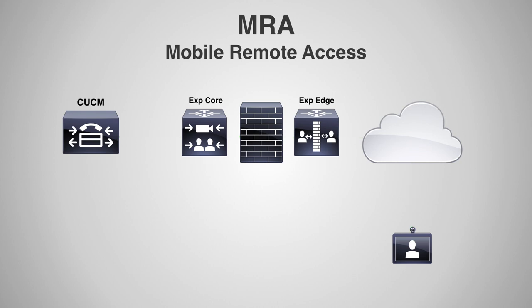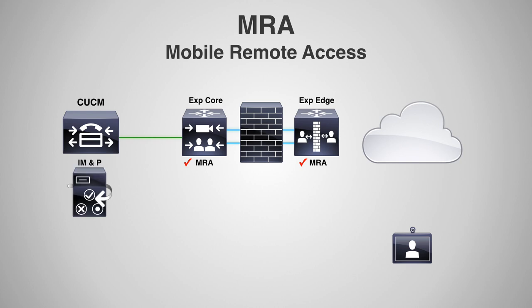Because we're still working with the Expressway Core and Edge, we still need to set up that traversal communication between these two to get through the firewall. The traversal zones are going to work pretty much the same as explained in the previous video, but there are some differences. You also have to set up MRA on the Expressway Core and Edge. When you set up MRA on the Core server, the MRA settings actually take over some of the control of the Expressway Core, and it'll automatically set up a neighbor zone to your CCM. In addition, if you have an IM and Presence server, it'll automatically set up a neighbor zone to your IM and Presence server as well.